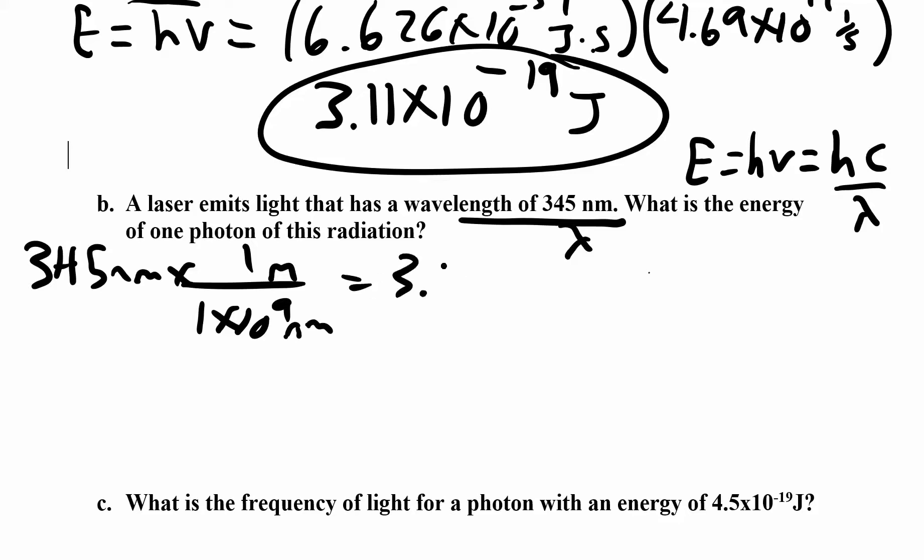We end up with 3.45 times 10 to the negative 7 meters. So there's a whole bunch of nanometers in 1 meter. So now we have meters. That's our wavelength.